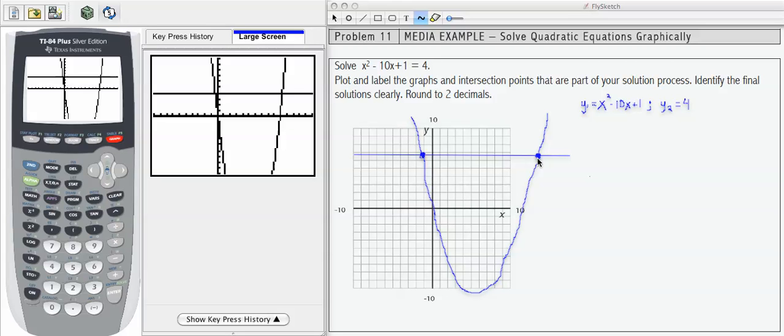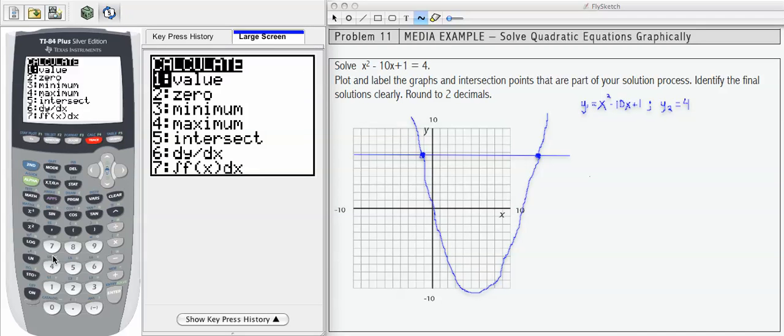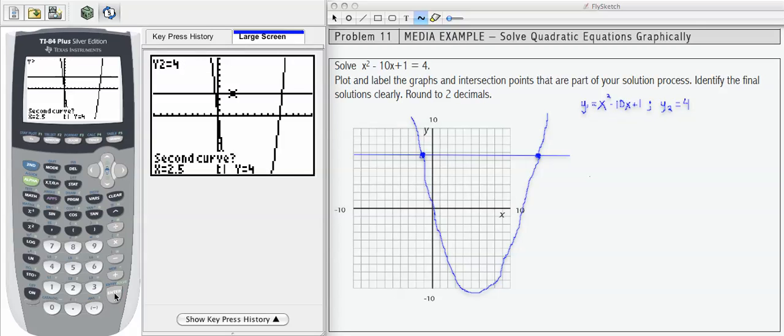So let's step through the steps on our calculator to find these. I'm going to use 2nd calc number 5 and then I'm going to press enter three times and see which intersection that gives me.